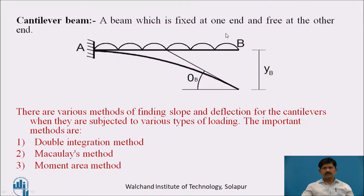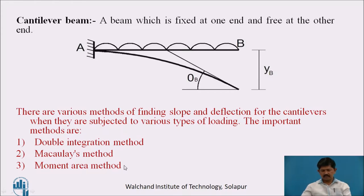A cantilever beam is fixed at one end and free at the other end, as shown in this figure. There are various methods of finding slope and deflection for cantilevers: double integration method, Macaulay's method, and moment area method. We are dealing with the double integration method.